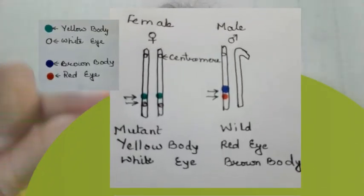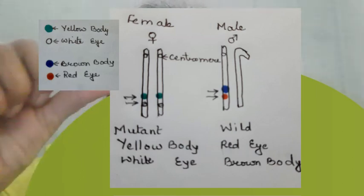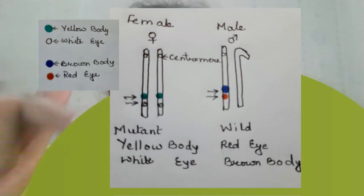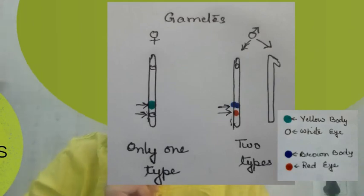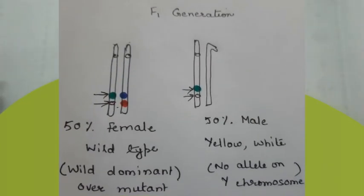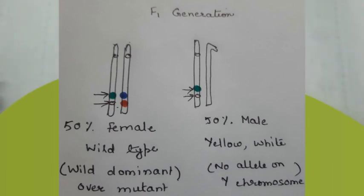Note the distance between the body color gene and the eye color gene — it is very, very small; they are present just next to each other. Only one type of gamete is formed by the female because she is homozygous, and two types are formed by the male. Because of these different gametes, the F1 progeny shows 50% female and 50% male. The females are wild type because they received one X chromosome from the male, while the males become yellow body and white eye because they receive the X chromosome from the mutant female, and Y is not having anything.